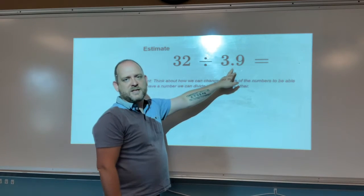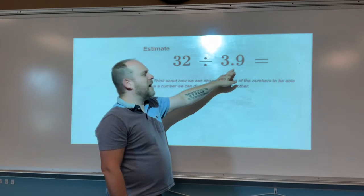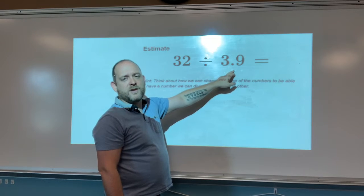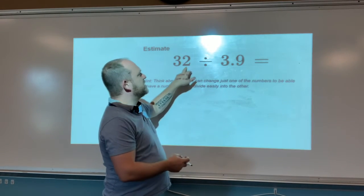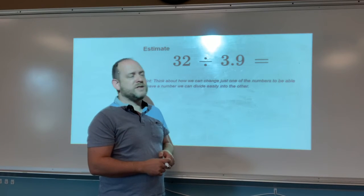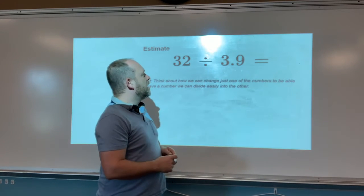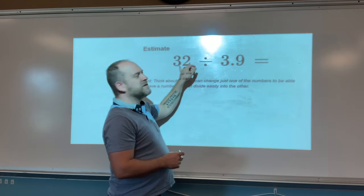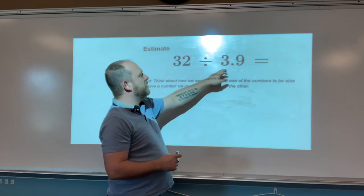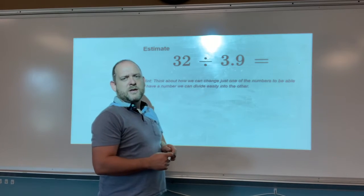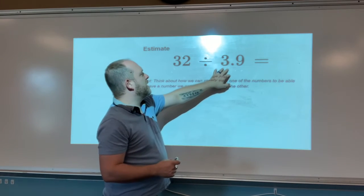Now this number does have the decimal and I don't know my 3.9s. So let's think of a number that might be compatible to 32, something that's easy to work with with 32 that is close to 3.9. We could go to 3, but that doesn't really work with 32 for me. I guess if we change that to 30, that would be 30 divided by 3, which would be about 10, but we're having to change this number quite a bit.